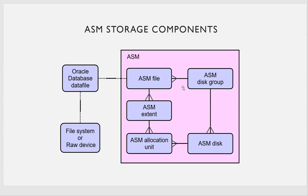To correlate this with ASM: this is the physical structure of the database, where I have my raw device or file system mapped to Oracle data files. All those Oracle data files together make the Oracle database. These Oracle data files are mapped to ASM files because the database is on an ASM disk group. Those ASM files are nothing but a combination of ASM extents, and ASM extents are a combination of allocation units at the ASM level. These allocation units are physically mapped to ASM disks — whether it's a data disk group, redo disk group, or FRA disk group.